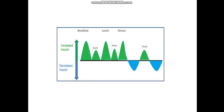Insulin levels fluctuate throughout the day — increasing after breakfast, snacks, lunch, and dinner, and decreasing when no food is consumed. The level of insulin differs with each meal and snack depending on the amount of glucose substrate available, so insulin rises or falls accordingly.